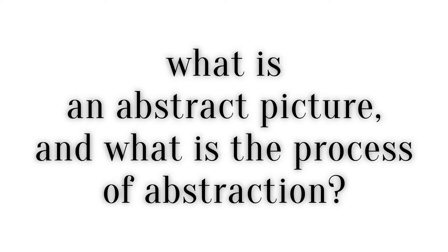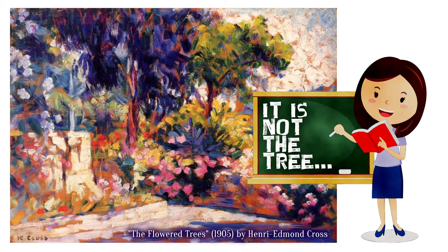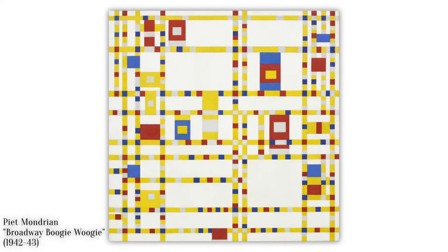What is an abstract picture and what is the process of abstraction? Something we all know but it needs to be stated here is that a painting of a tree is not the tree. It is already a slight abstraction of the tree because before anything else it is patches of colour of paint on a flat surface. We also know that we can create extremely abstract pictures where no object, scene or person is recognisable.